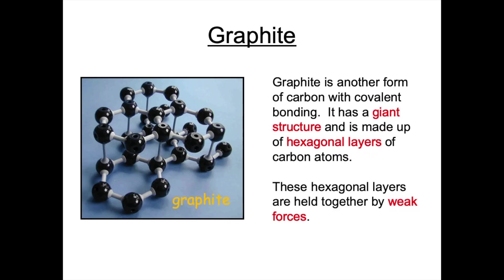Now let's turn our attention to another allotrope of carbon: graphite. Graphite has a giant structure just like diamond. However, this allotrope is made up of hexagonal layers of carbon atoms. These hexagonal layers are held together by weak forces. Just like we found in diamond, the structure of this allotrope links to its properties and uses.